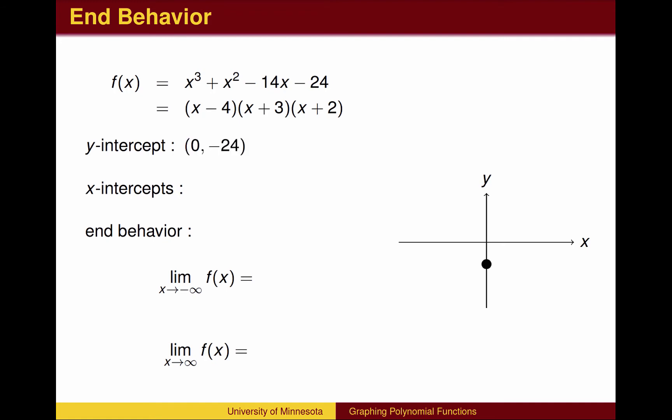The next step is to find the x-intercepts, which occur when the y-value or function value is zero. A polynomial will equal zero only when one of the factors equals zero, so it is best to use the factored form. We get x-intercepts when x equals 4, x equals -3, and x equals -2. Here, the x-intercepts are placed.